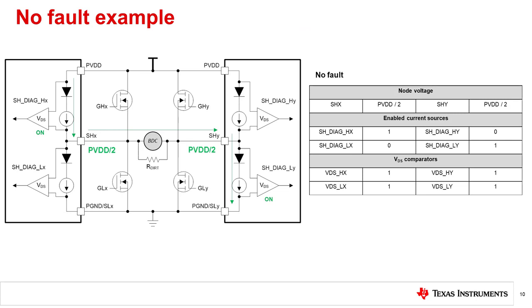For all of the following examples, the top left and bottom right current sources are enabled. In this no-fault example, the load is connected across SHX and SHY and the two mentioned current sources are enabled. The SHX and SHY voltages sit at PVDD divided by 2, and all comparators have a positive difference between each comparator's positive and negative terminals. This results in all comparators having a high voltage level output, reflecting that the load is connected.